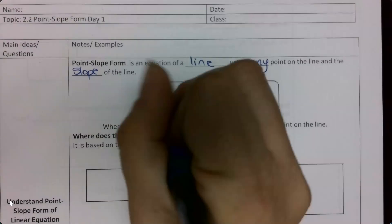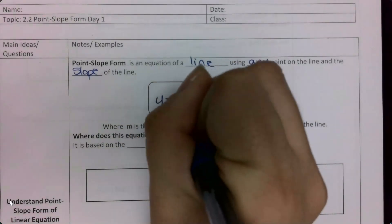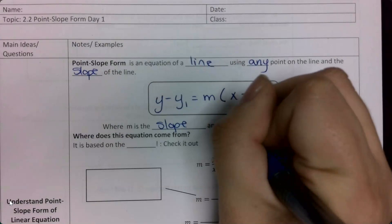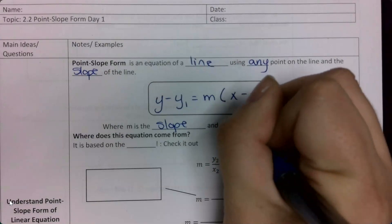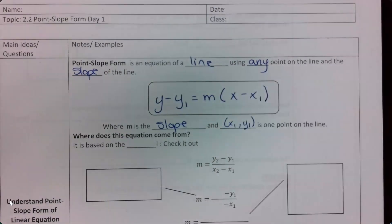In this formula, m is my slope, and x1, y1 is a point on the line.